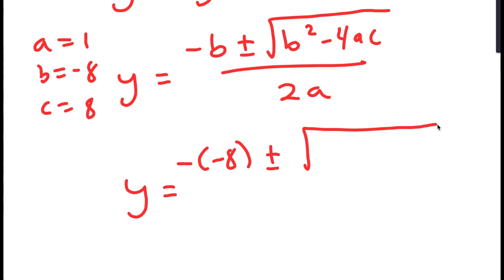For the other solution, I get x equal to 8 minus (4 minus 2 root 2), so x equals 4 plus 2 root 2, meaning the second solution is (4 plus 2 root 2, 4 minus 2 root 2). These are the two solutions to the system of equations.